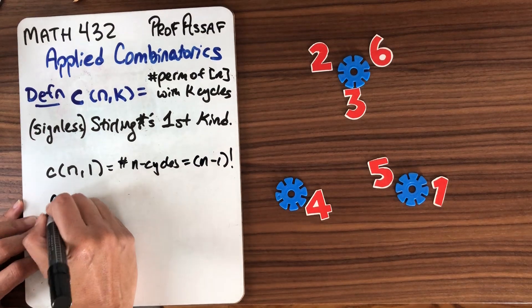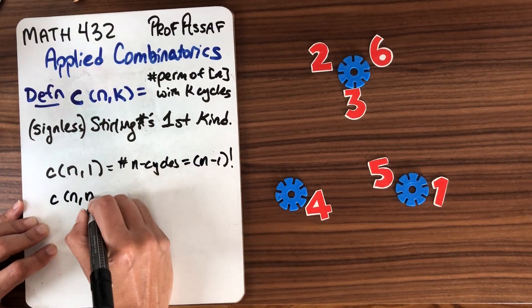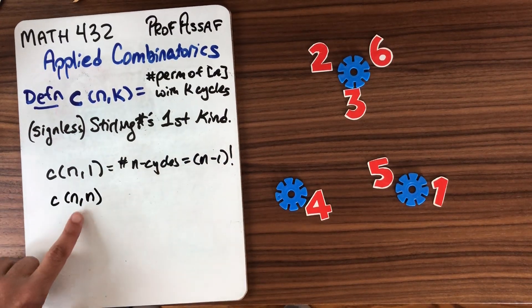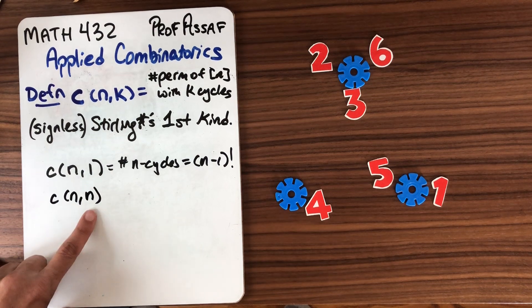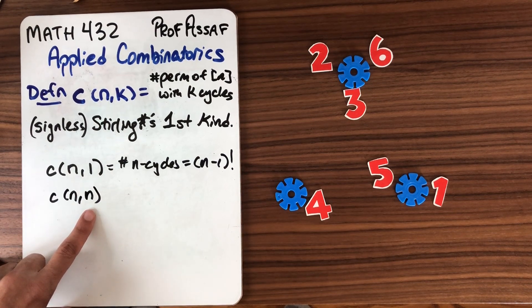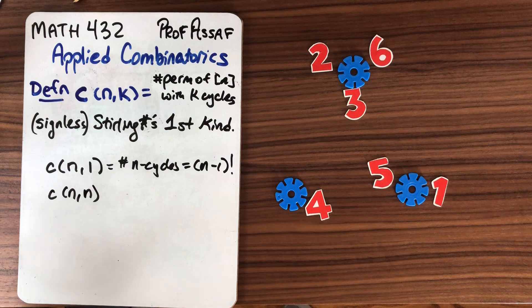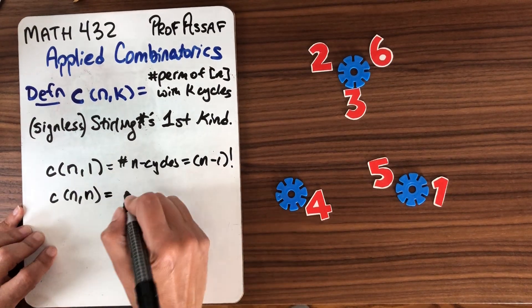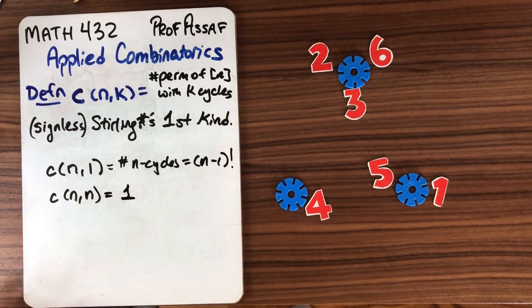Let's jump to the other extreme. What is c(n,n)? This means permutations of n with n cycles. That means every number is in its own cycle. Well there's one way to do that. It's the identity. So that one's nice and boring.